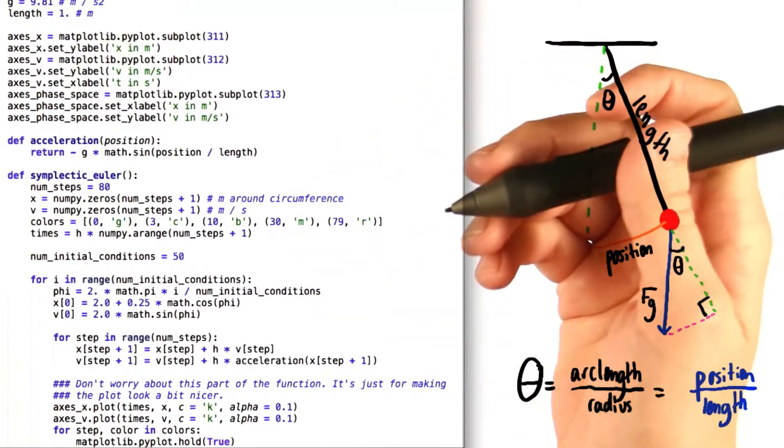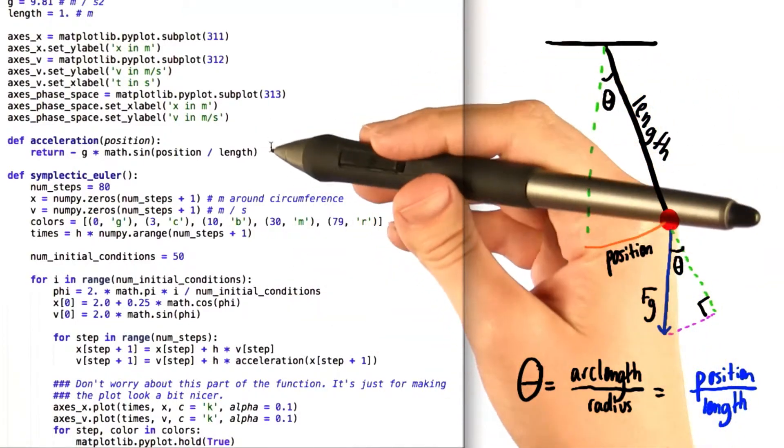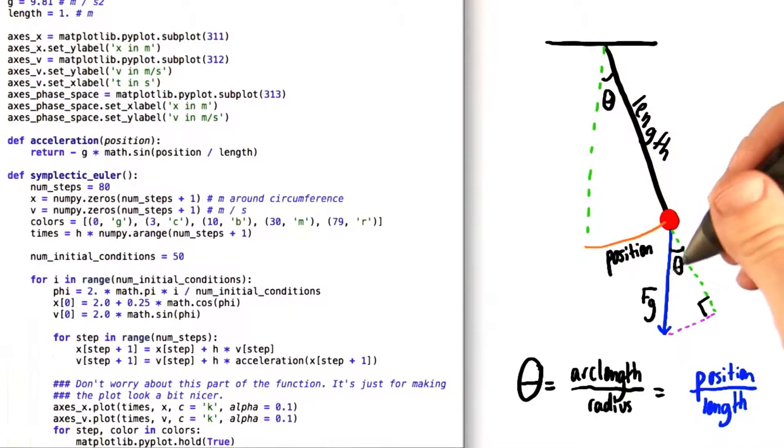So let's go over the solution to this problem, starting with the definition of the acceleration function. We know that the acceleration due to gravity points downward.